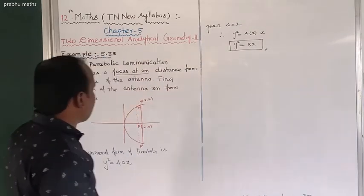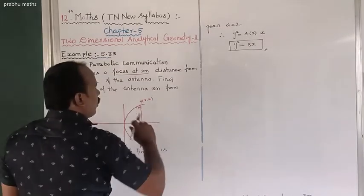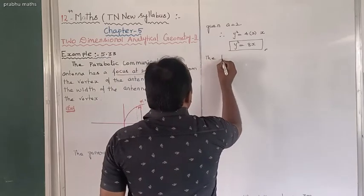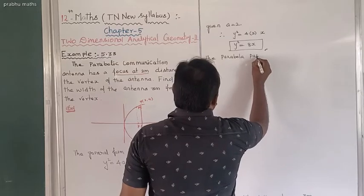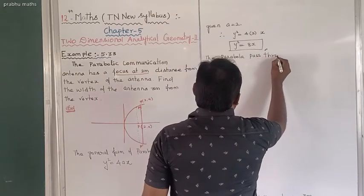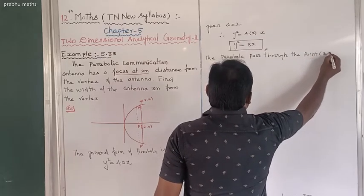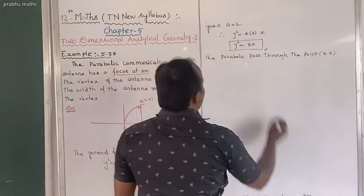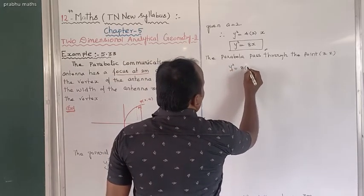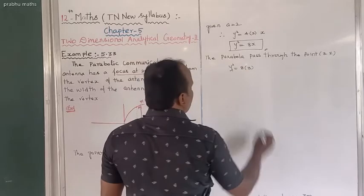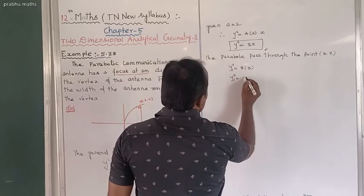To find the width, the parabola passes through the point (3, y1). Substituting into y² = 8x: y1² = 8 × 3, so y1² = 24.